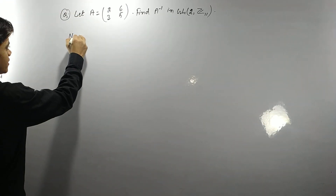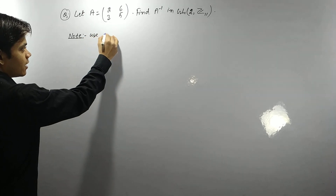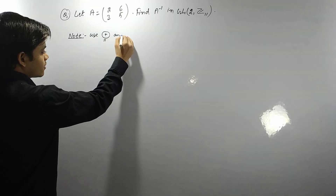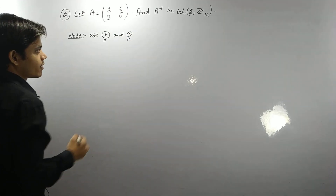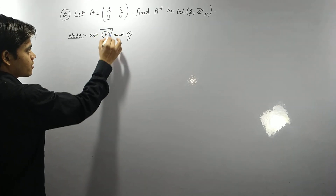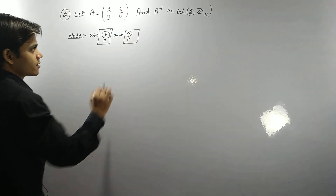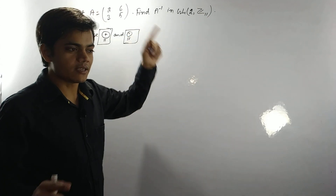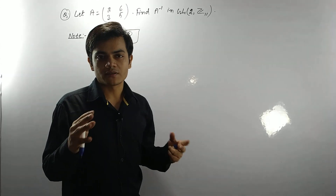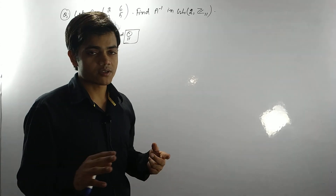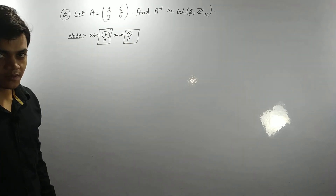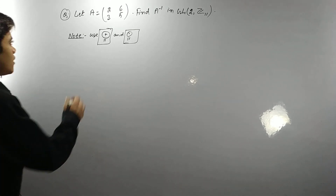Note the fact that we use addition modulo 11 and multiplication modulo 11. For addition you have to use this notation, and for multiplication you have to do these operations, because Z₁₁ is our structure. You have seen earlier that Z is defined as a group in terms of addition modulo and multiplication modulo as well. So do not use simple addition and simple multiplication — be aware of this.